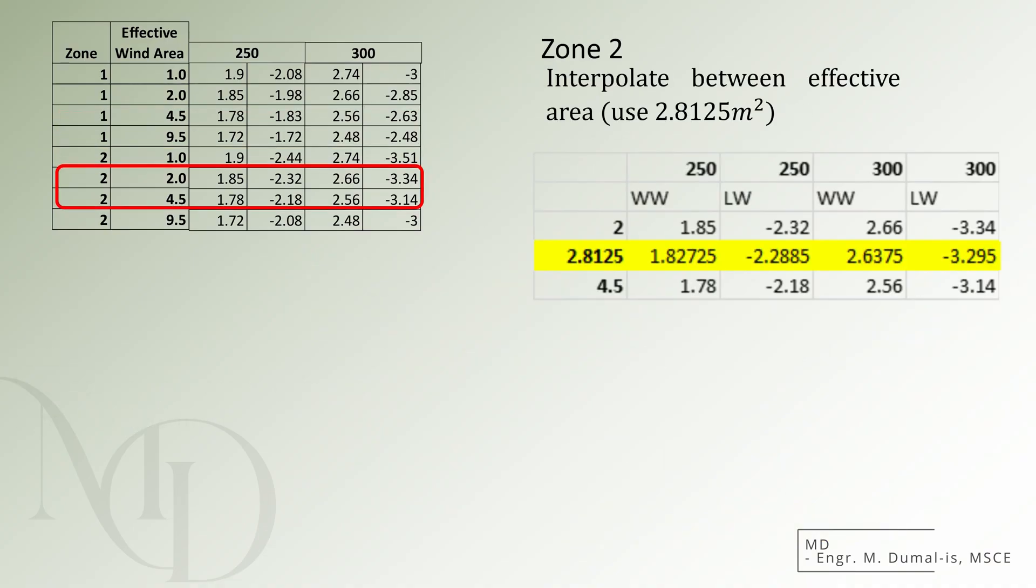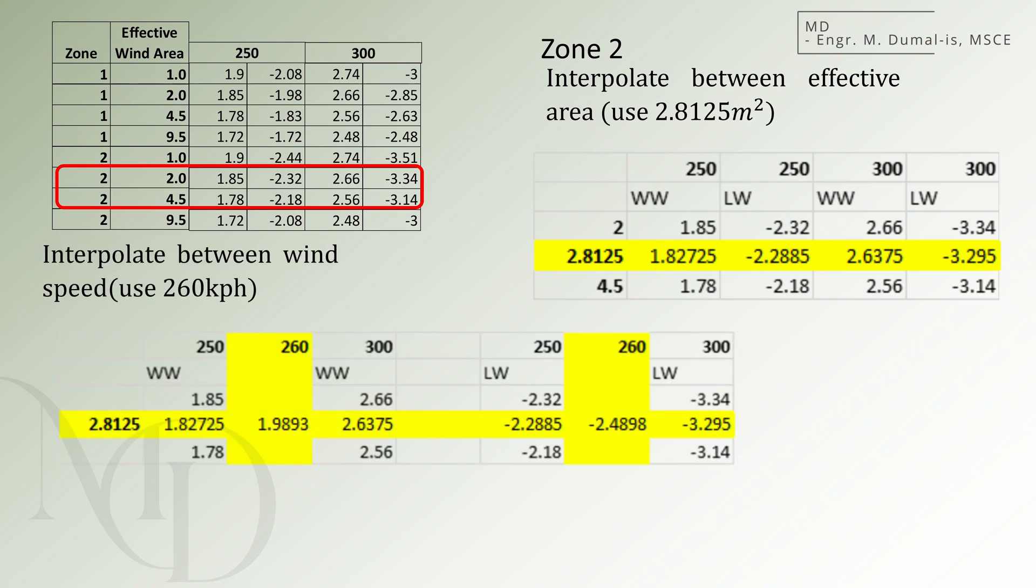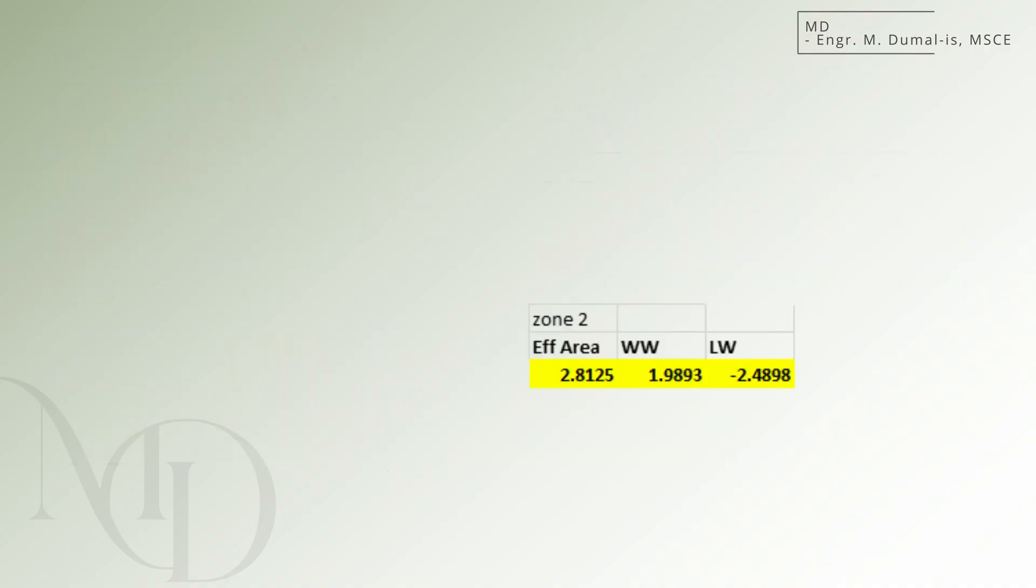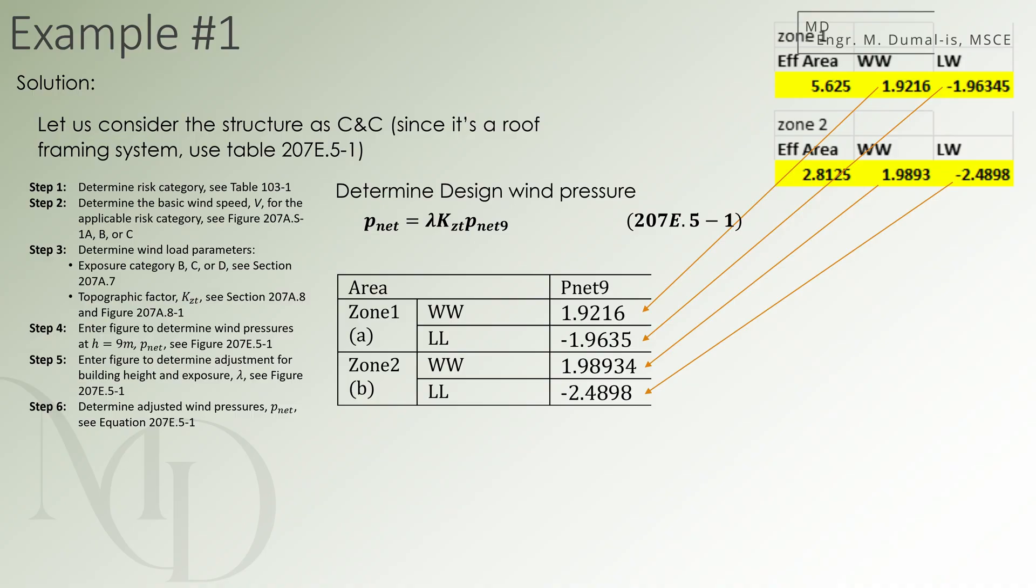It is now possible to compute the pressure for zone 2. We will simply follow the same process as before. This time, the effective area is equal to 2.8125 square meters and we will interpolate the corresponding pressure values. After the effective area, we will also interpolate for the wind speed. This will give us the pressures 1.989 kilopascals and negative 2.4898 kilopascals for zone 2. We may also put the results of the pressure for zone 1 and 2 into a single table.